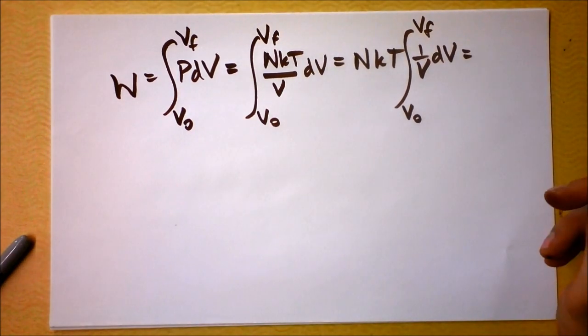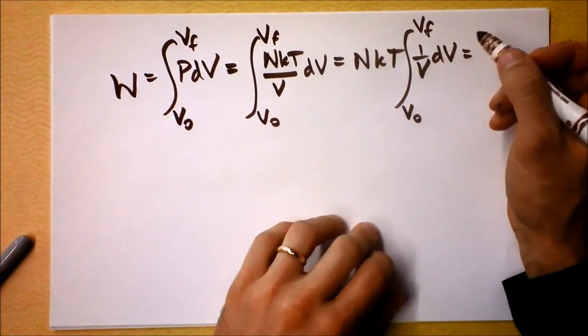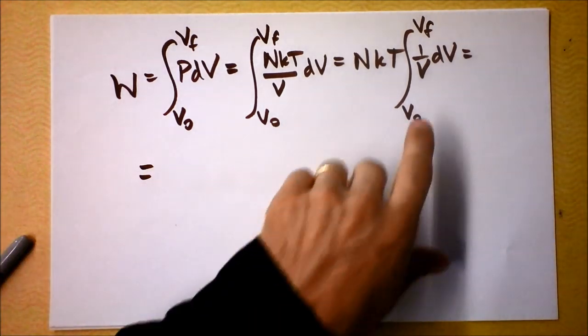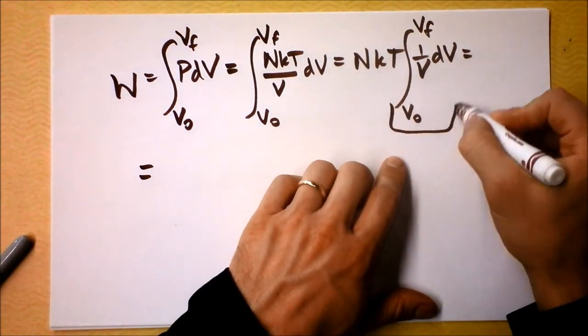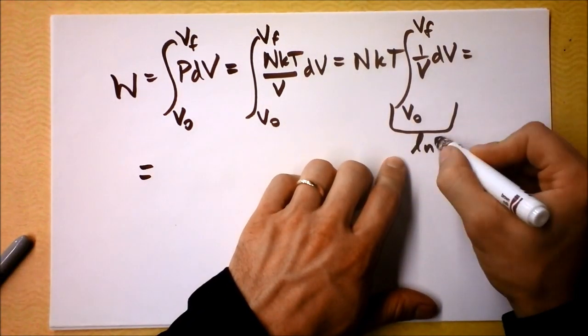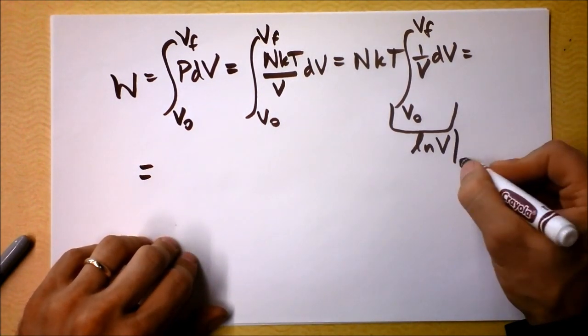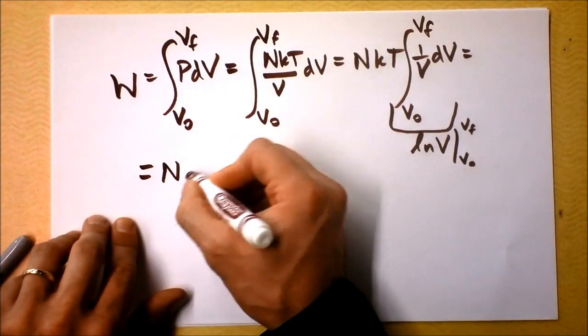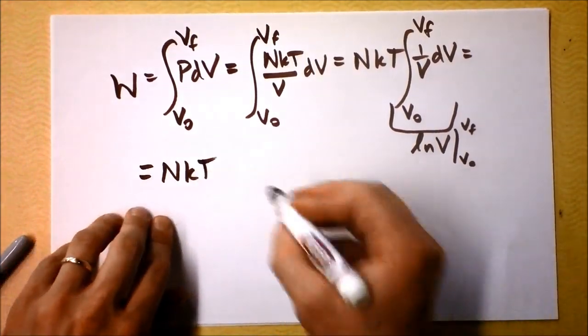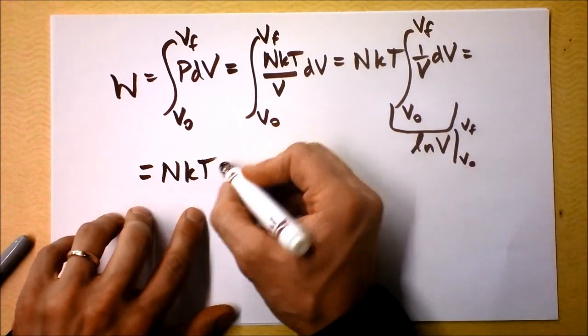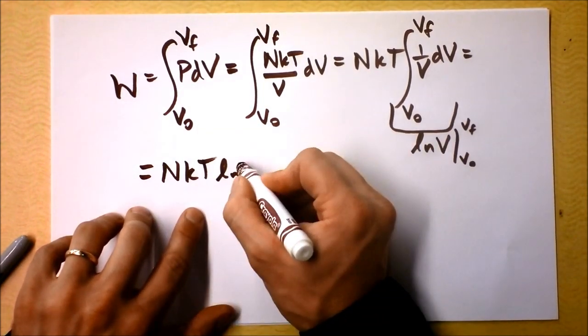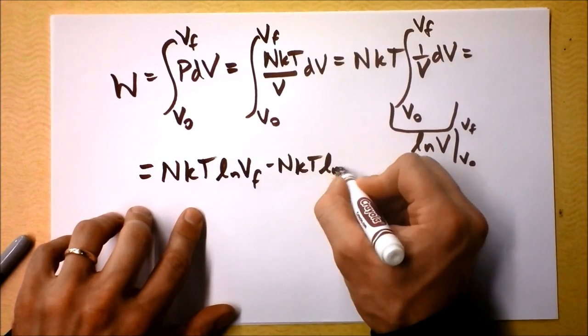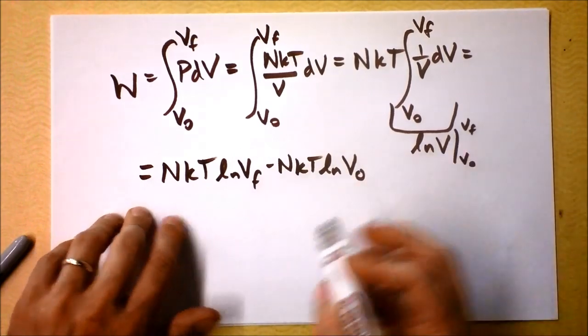which is the same as the integral of 1 over X dx. I can change these variables as much as I want. This integral turns out that it's just a natural log. Watch this. This is going to be, well, let's go down to this next line right here. There's a natural log here and it's natural log of V and we have to evaluate it between V0 and VF. So I'm going to say we've got NKT natural log of the final minus NKT natural log of the initial.